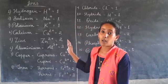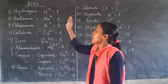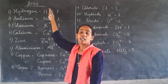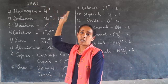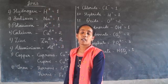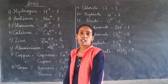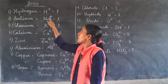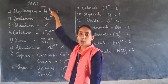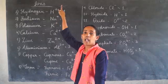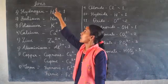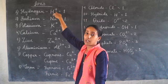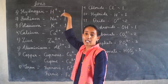Here are some ions. First, hydrogen. Hydrogen's atomic number is one and its outer shell contains only one electron. It can lose that electron to become a positively charged ion, H plus. Since the number of electrons lost is one, the valency is 1.